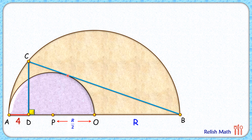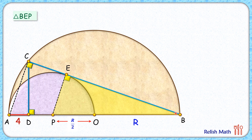Let's assume this point of tangency as point E and join EP. Now EP is the radius and CB is the tangent, so this angle here will be 90 degrees. Let's join CA. Now the diameter AB always subtends an angle of 90 degrees, so angle C will also be 90 degrees. If you look at triangle BEP — the yellow triangle — and triangle BCA, the bigger triangle, both have angle B in common and both are right angle triangles, so both triangles are similar by angle-angle similarity.